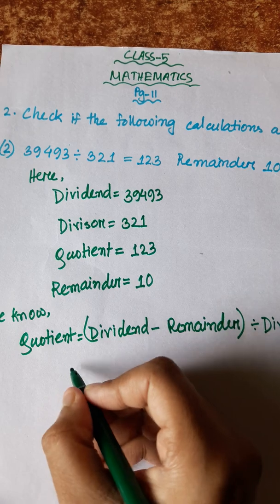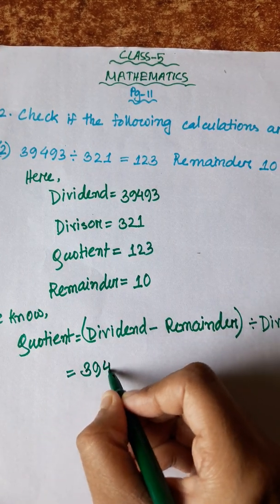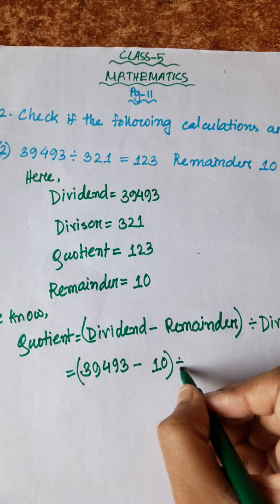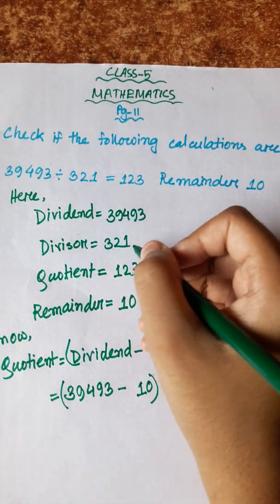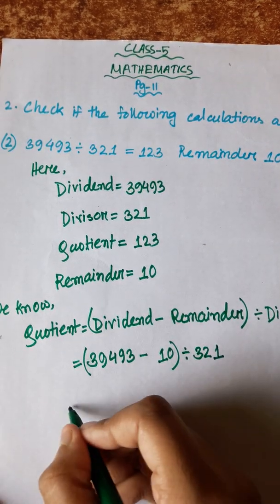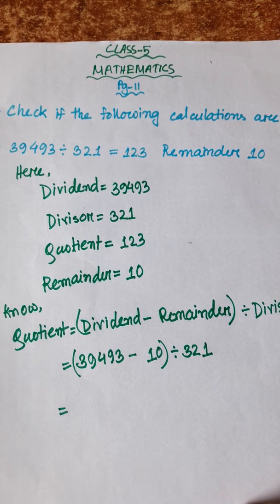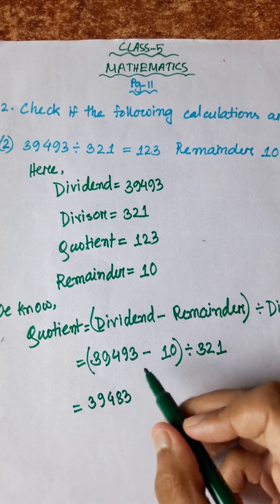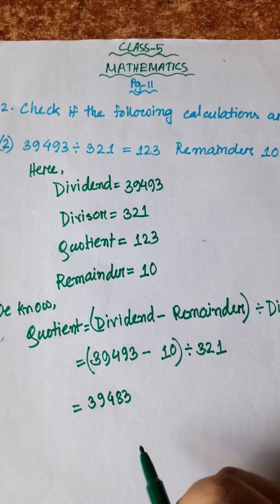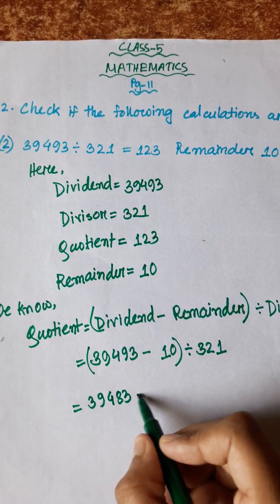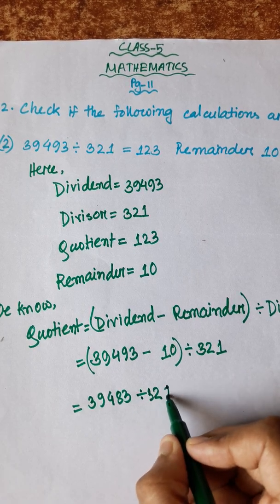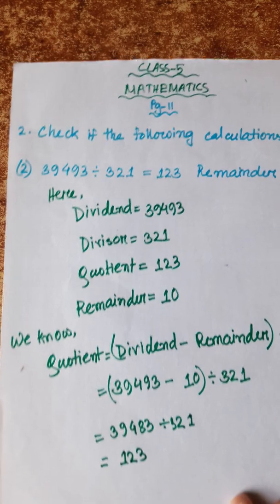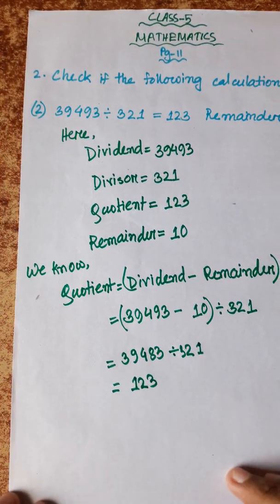Now putting in the numbers: dividend is 39493, minus remainder 10, divided by divisor 321. So (39493 - 10) / 321 = 39483 / 321 = 123. And our quotient is 123 — that means this division is also correct.